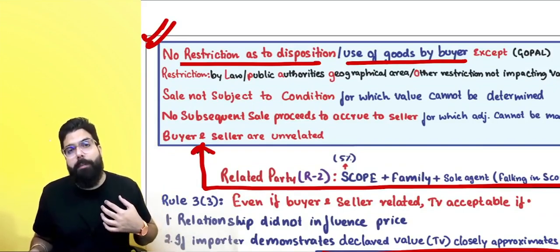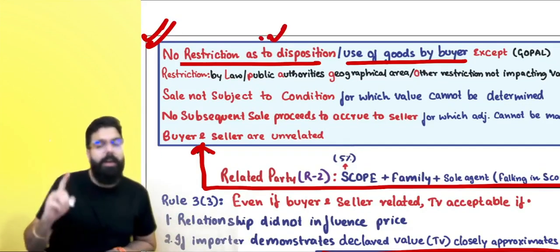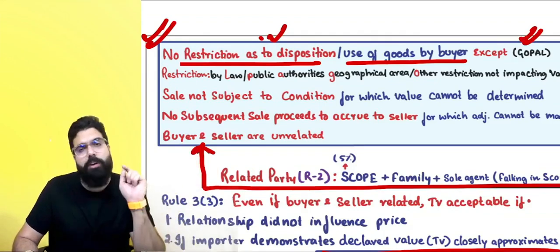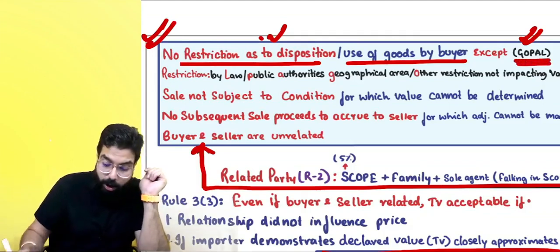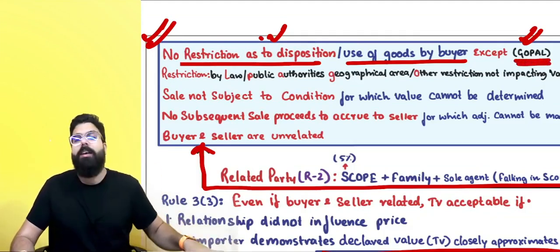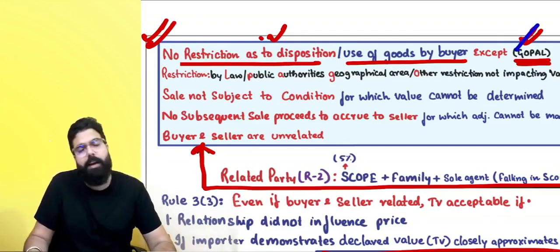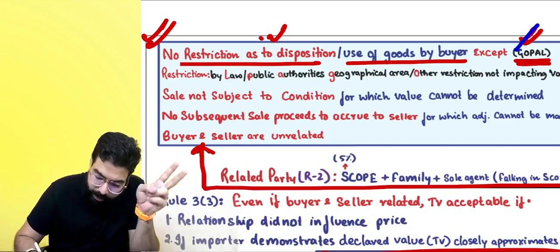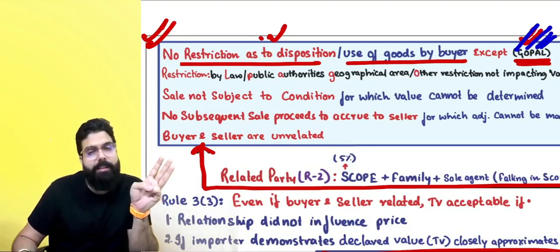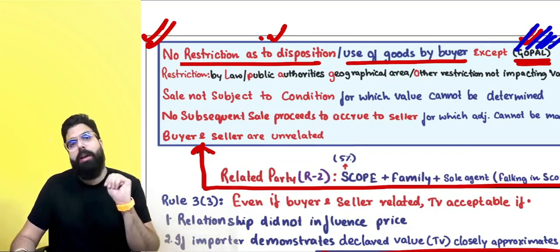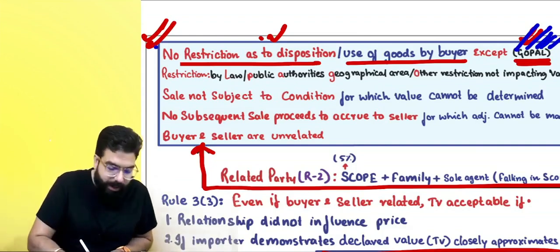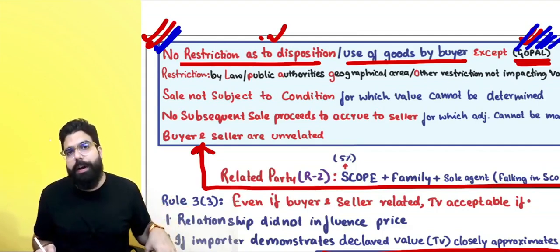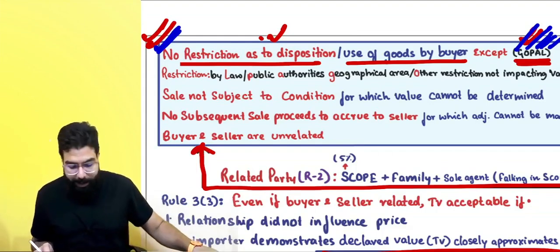The first condition under Rule 3(2): no restriction as to the disposition or use by the buyer. There should be no restriction on how you use or further sell the goods. However, some restrictions are acceptable — I call these GOPAL restrictions. G: geographical area restriction — fine. O: any other restriction not impacting the price — fine. P: public authority restriction — also fine. L: lock restriction — also fine. Any restriction other than GOPAL will cause the officer to reject your declared value and apply valuation rules.